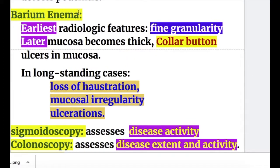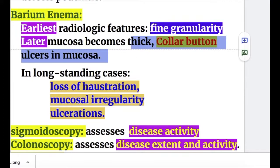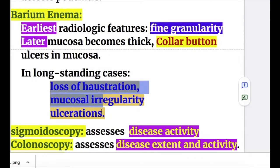Findings on barium enema: the earliest radiologic feature is fine granularity, and later the mucosa becomes thick with collar button ulcers. In long-standing cases, barium shows loss of haustrations, mucosal irregularity, and ulcerations.